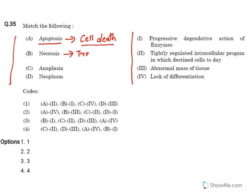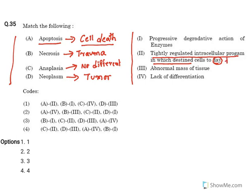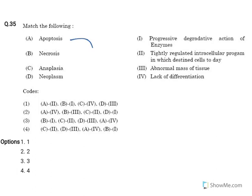Necrosis also results in cell death, but it is because of external trauma or external injury. Anaplasia — 'ana' means without — refers to lack of cell differentiation, no differentiation will be there. Neoplasm — 'neo' means new, 'plasm' means cell multiplication — results in a cell mass which is nothing but tumors. Apoptosis is a tightly regulated intracellular program in which cells are destined to die.